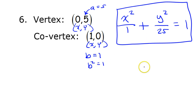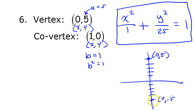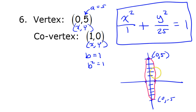This ellipse is vertically stretched. If you sketch it: (0, 5) is on the y-axis, with another point at (0, -5). The co-vertex is 1, so there's a point at (1, 0) and another at (-1, 0). We're looking at a tall, skinny ellipse. It's definitely stretched in the y direction, so the bigger number goes with the y. The bigger denominator should be under y squared.